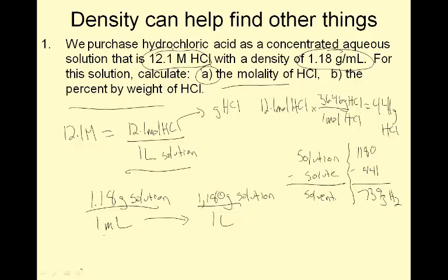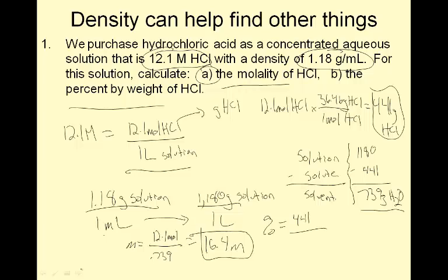Now notice this density part right here, this says 1.18 grams of solution and one milliliter of solution. Now I can change this to liters by multiplying it by a thousand. So multiply the top by a thousand. 1,180 grams of solution in one liter. Notice how this is the same now. So 441 grams in one liter. So that means that grams of solution minus solute will equal solvent. My solution, 1180, minus 441, 739 grams of H2O.